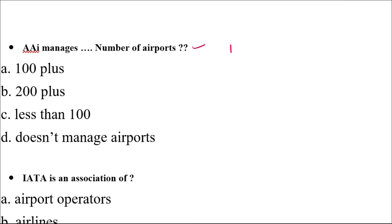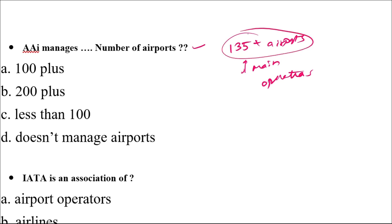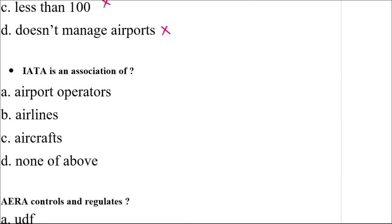Next, AAI manages how many airports? As of today, AAI manages 135+ airports — they manage and maintain operations and many other things for more than 135 airports. So the correct answer is 100+. It is not 200+, not less than 100, and they do manage airports, so the correct answer is 100+ airports.